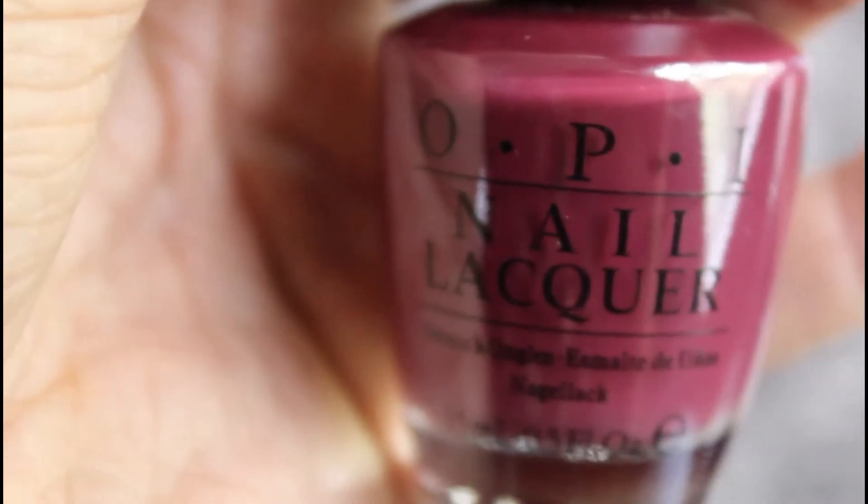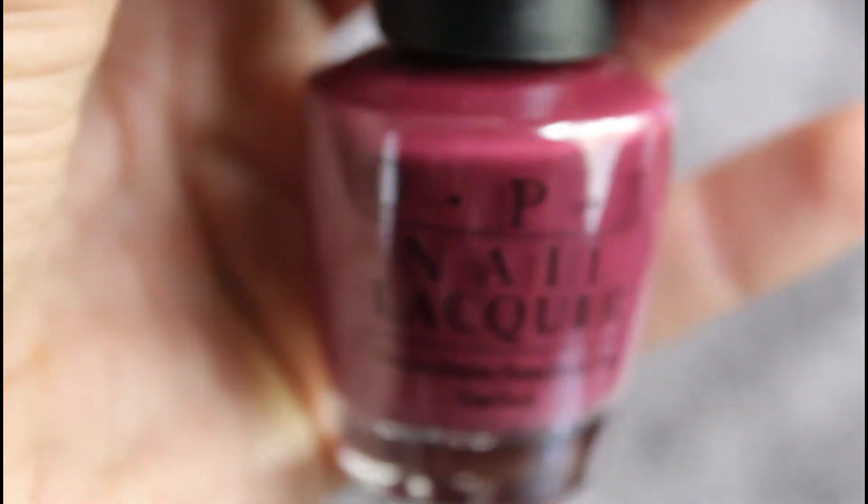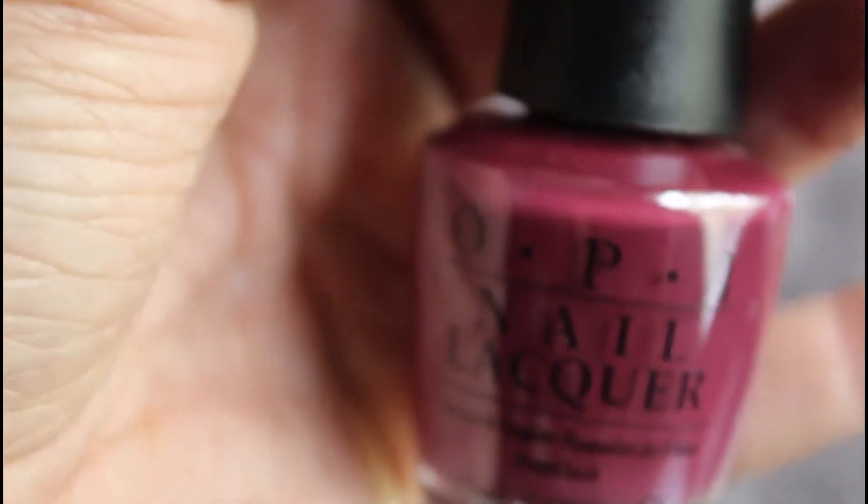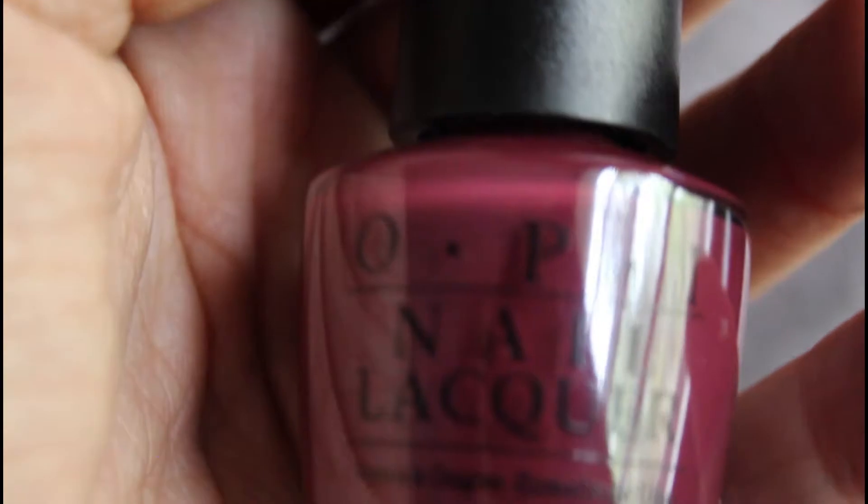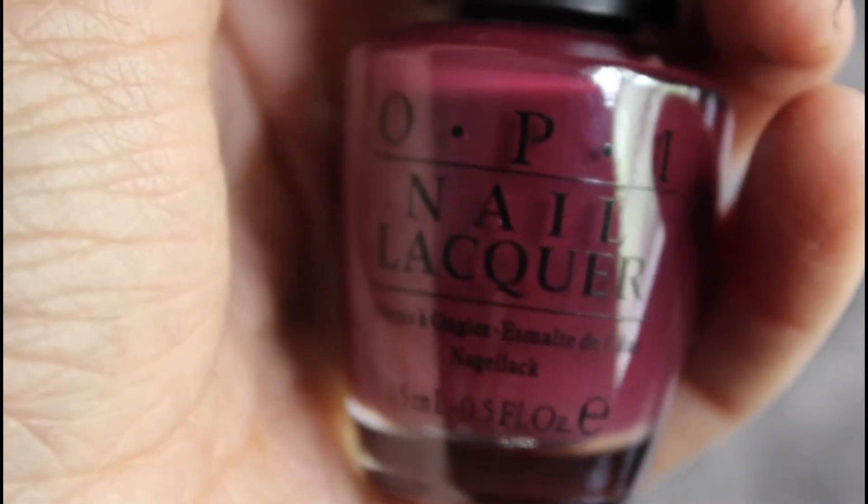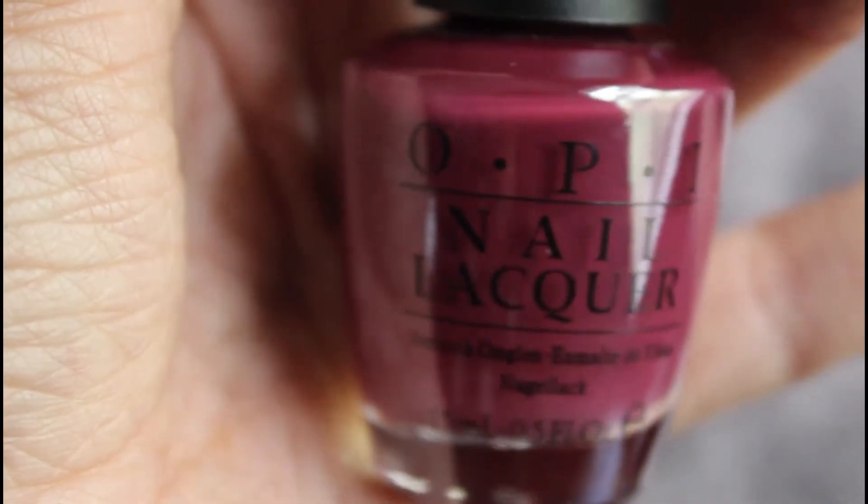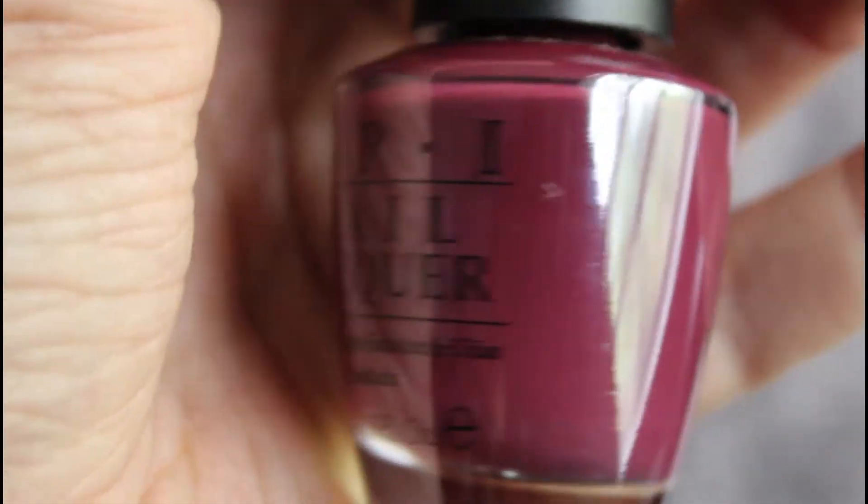So I'm guessing this color is called We the Female because it maybe represents a classic female color representation. It's kind of a purpley red, not quite burgundy, but there's something about it that just says classic woman. Let's see what it looks like when we swatch it.